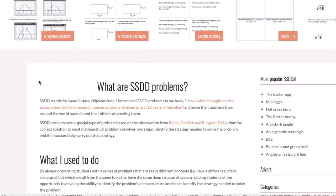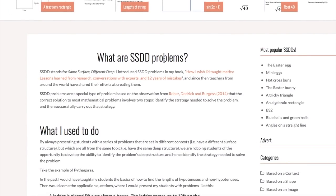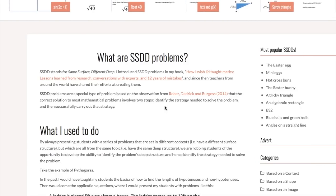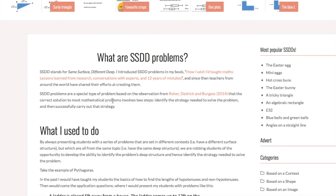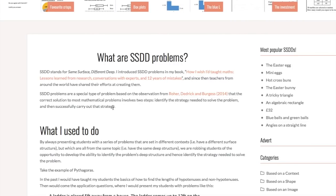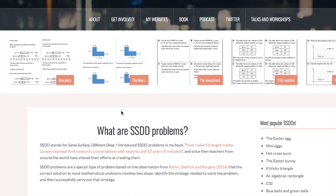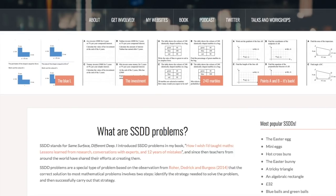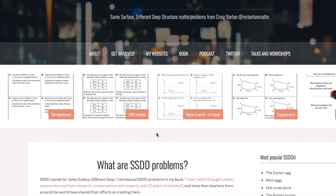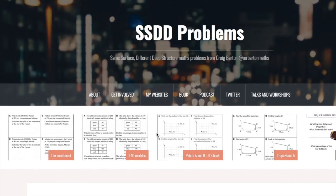He creates lots of different resources and websites for GCSE students and this website is all about recognizing what strategy you need to solve a particular problem. So here he has a bit of an introduction and it talks about what are SSDD problems. It goes into a bit more detail here and it says SSDD problems are the special type of problem based on the observation by Rohrer, Dedrick and Burgess that the correct solution to most mathematical problems involves two steps: Identify the strategy needed to solve the problem and then successfully carry out that strategy.